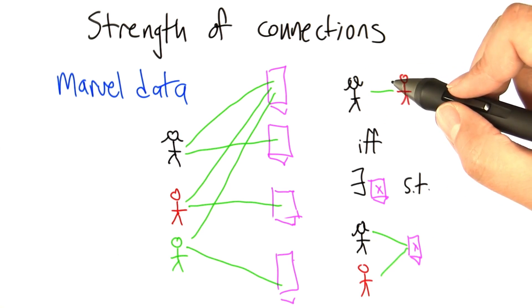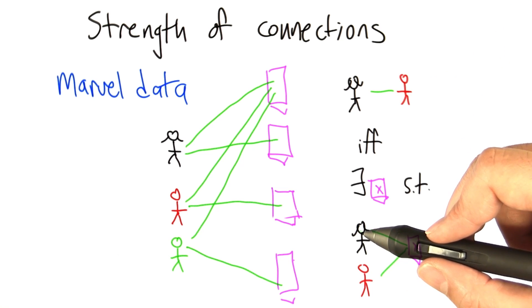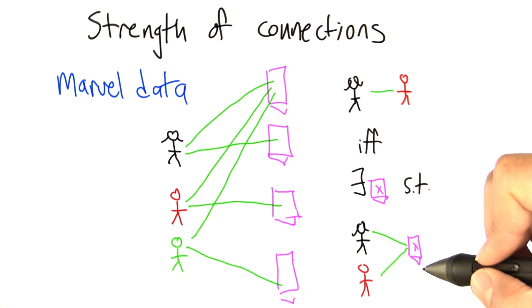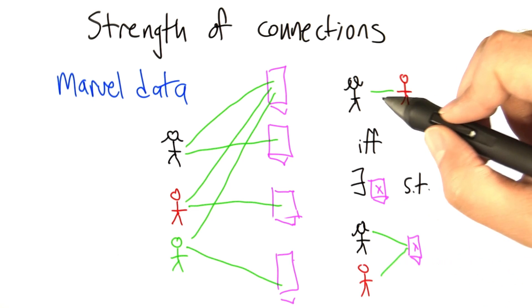So there's really two different graphs that we're working with here. There's the graph between comic book characters, and then there's the bipartite graph between comic book characters and comic books.